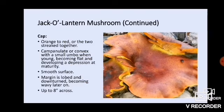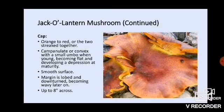The cap of the jack-o'-lantern mushroom is orange to red, or the two colors will be streaked together, darker in the center — you can see that happening in the photo. It is campanulate, which is kind of like a bell shape with a little umbo at the top, or convex with a small umbo when young, then becoming flat and developing a depression at maturity. You can see that depression here, indicating this is a more mature mushroom.